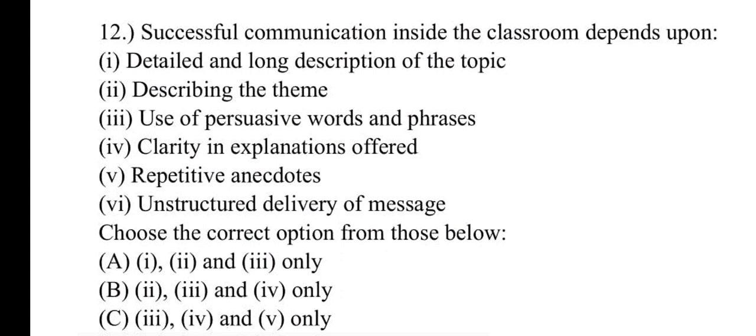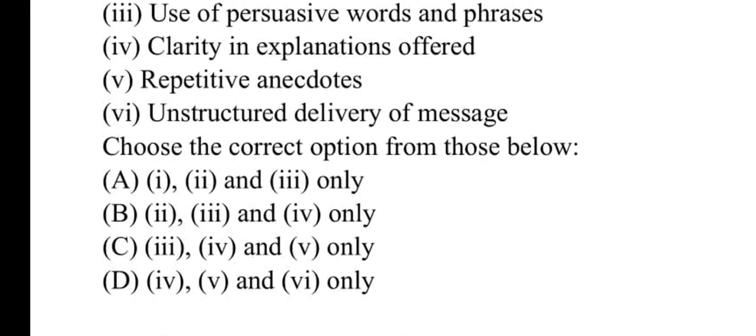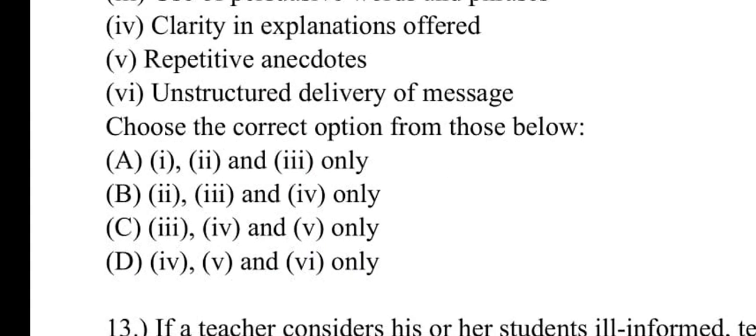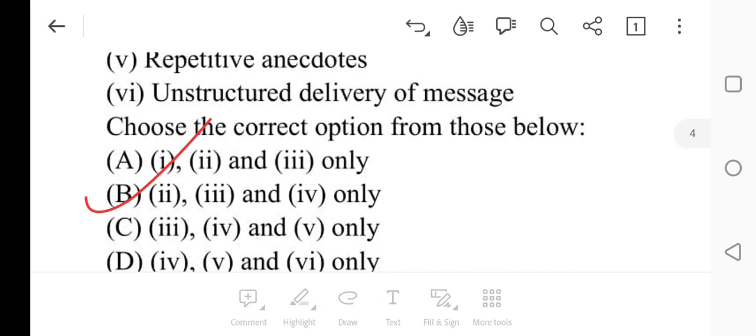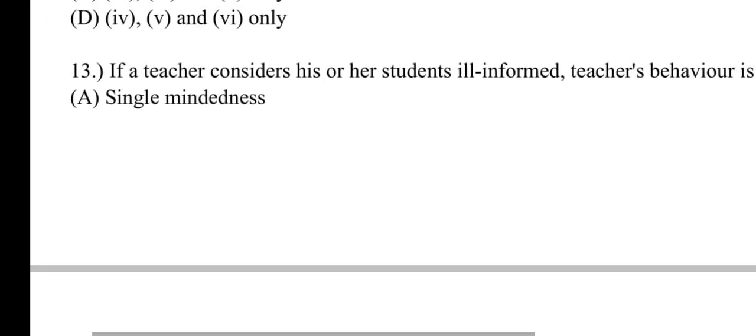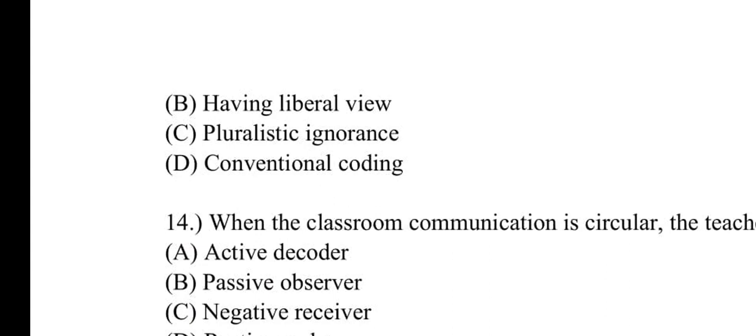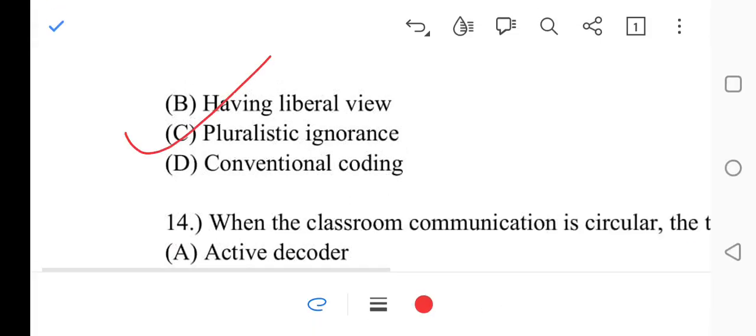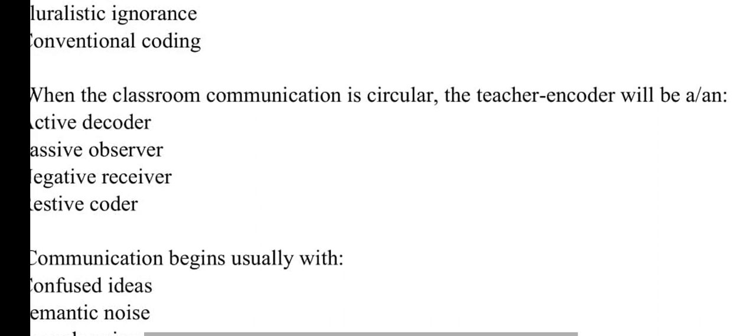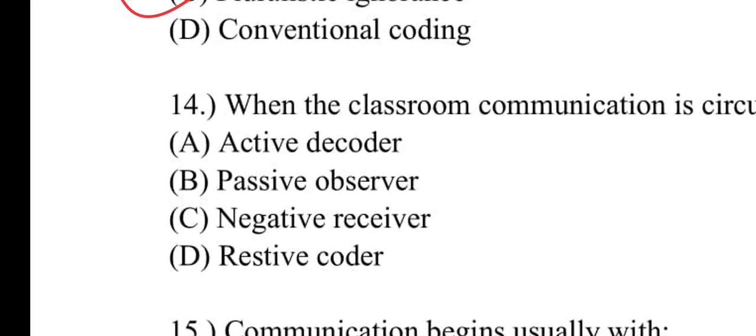Number twelve: Successful communication inside the classroom depends upon what? Options include detail and long description of topic, describing the theme, use of persuasive words and phrases, clarity in explanations offered, repetitive anecdotes, unstructured delivery of messages. Number B will be correct: 2, 3, and 4 only. Number thirteen: If a teacher considers his or her students ill-informed, the teacher's behavior is described as what? Number C will be correct: pluralistic ignorance. Number fourteen: When the classroom communication is circular, the teacher encoder will be what? Number A will be correct: active decoder.